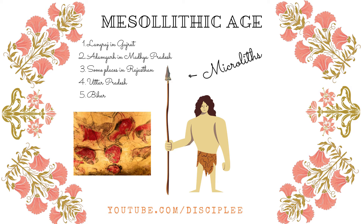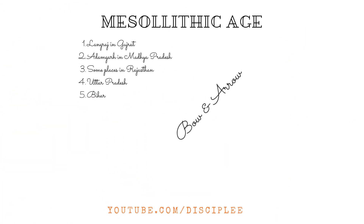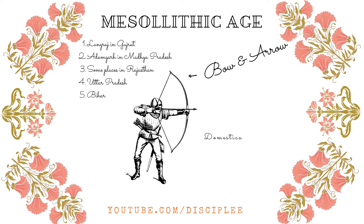The hunting-gathering pattern of life continued during this period, but there seems to have been a shift from big animal hunting to small animal hunting and fishing. The use of bow and arrow also began during this period. There began a tendency to settle for longer periods in an area; therefore, domestication of animals, horticulture, and primitive cultivation all started.